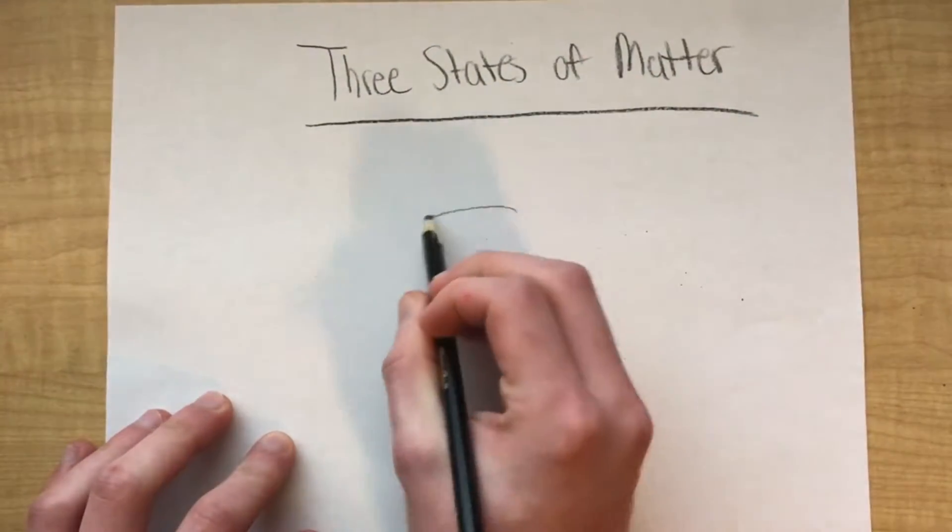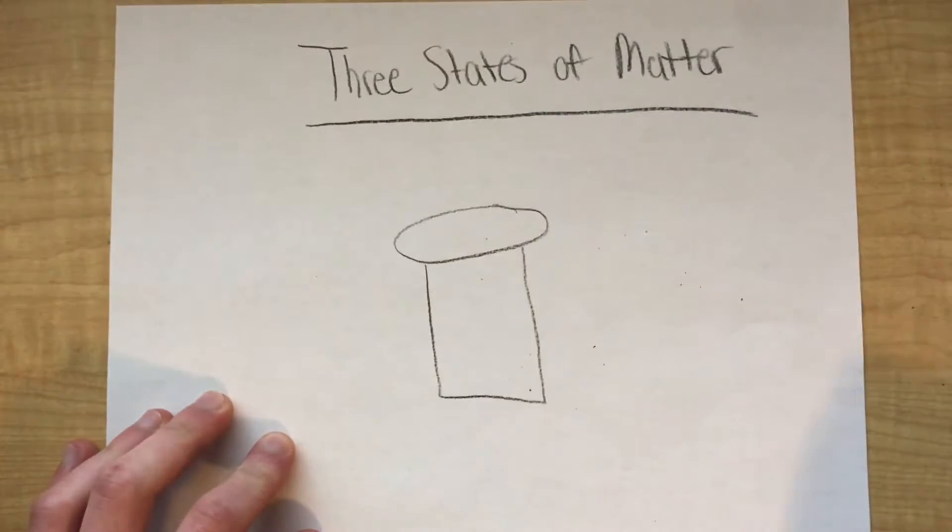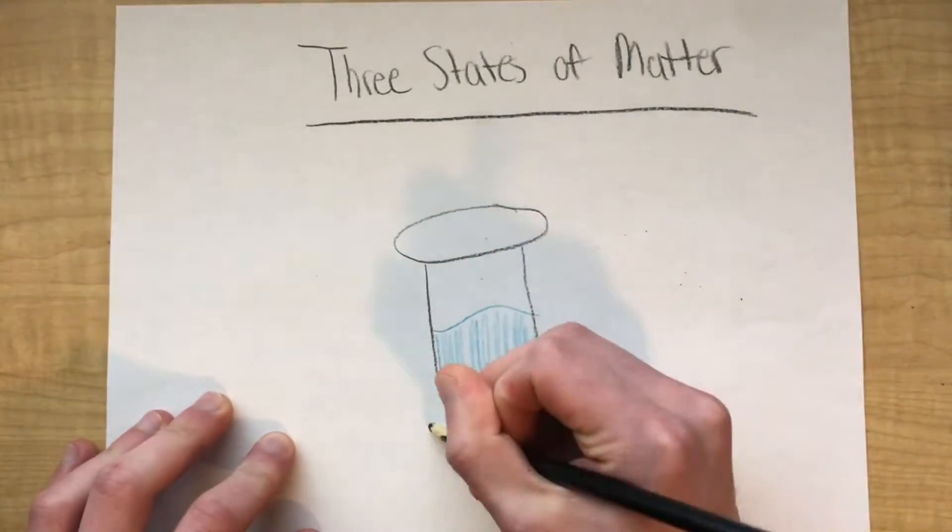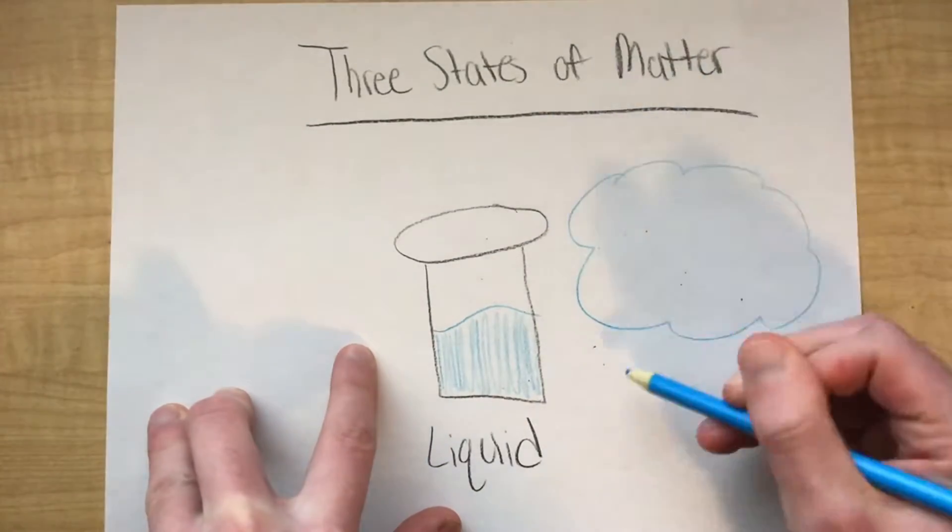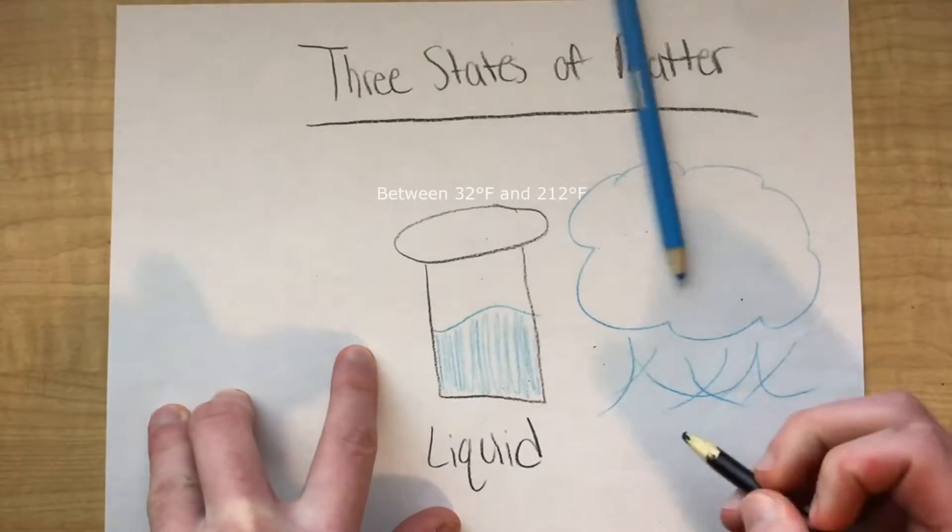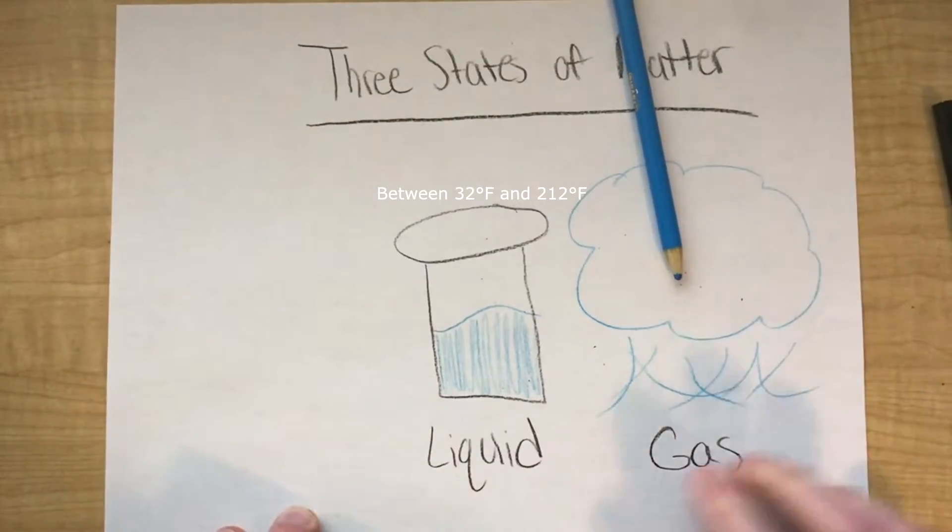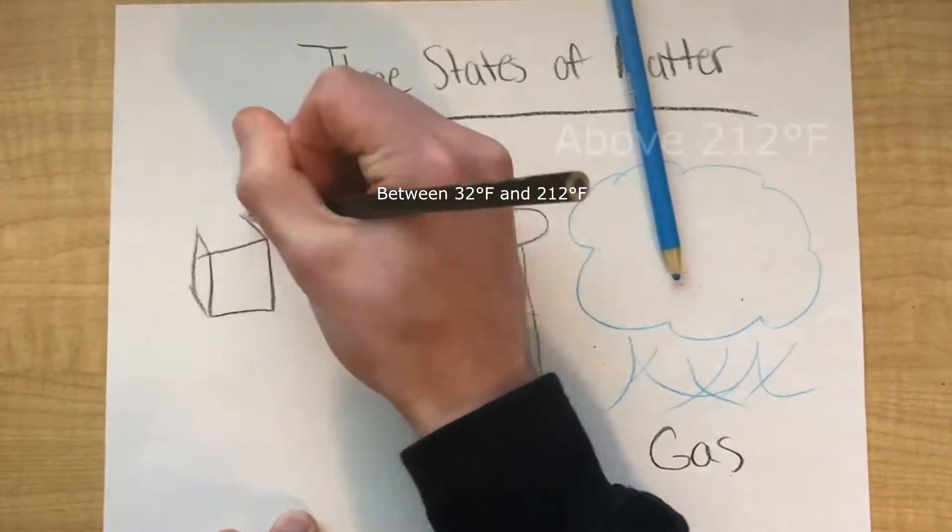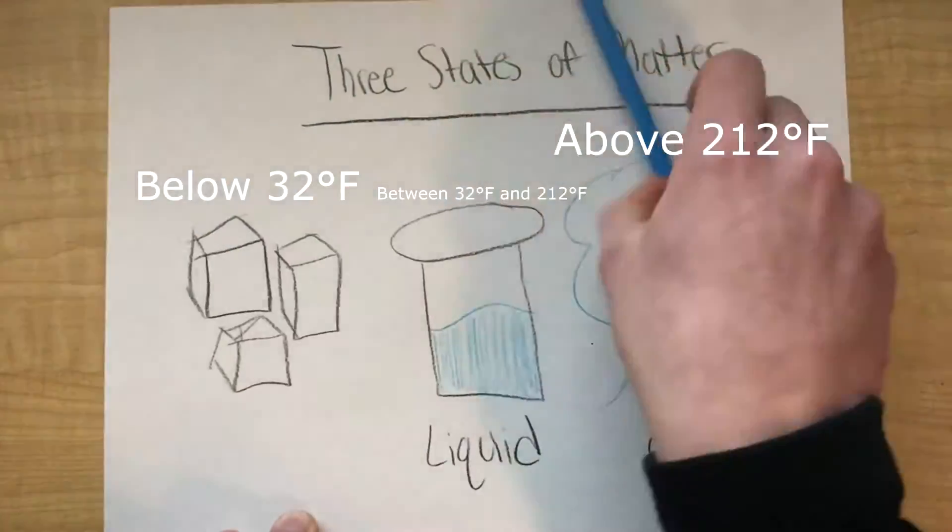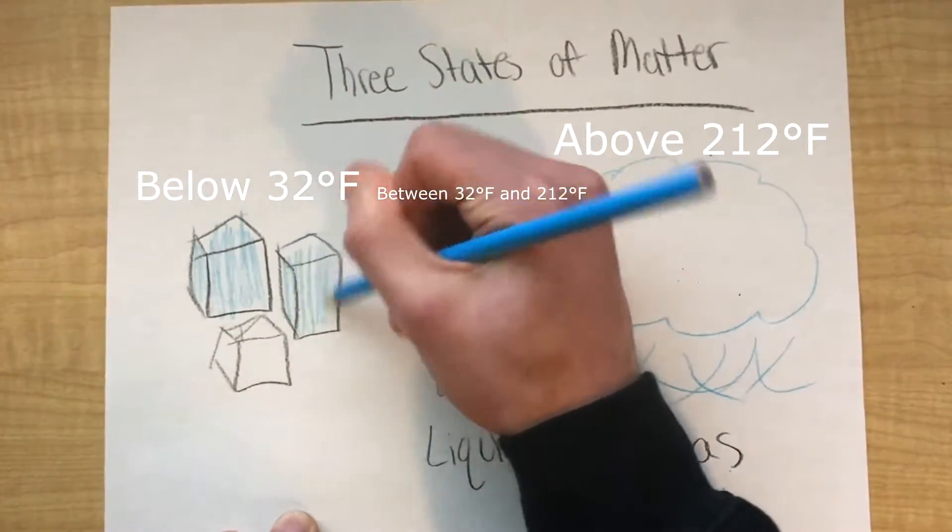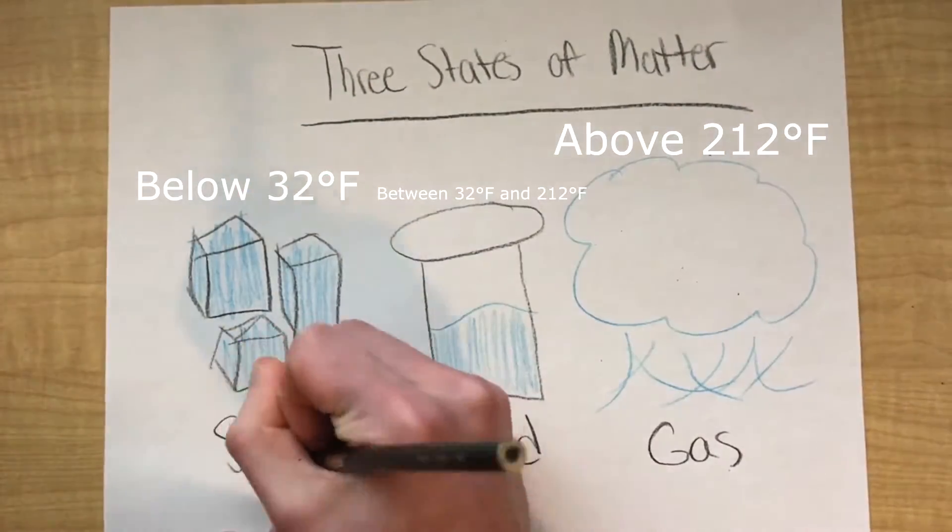To begin, water can actually occur in three different states of matter, and these states are liquid, solid, and gas. Water exists in the state of a liquid when its temperature is between 32 and 212 degrees Fahrenheit. Water will exist as a solid when its temperature is below 32 degrees Fahrenheit. And lastly, water will exist as a gas when its temperature is above 212 degrees Fahrenheit.